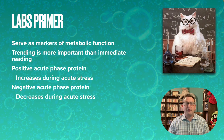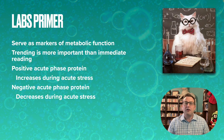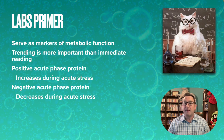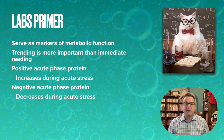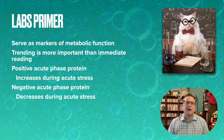Let's do a quick review. Labs serve as markers of metabolic function — they measure things and show us things that we can't see ourselves. Just like anthropometrics, trending is more important than an immediate reading. That trend line is more important than one data point, and that's especially true in geriatrics. A vocabulary reminder: a positive acute phase protein increases during an acute stress event; a negative acute phase protein decreases during an acute stress event.